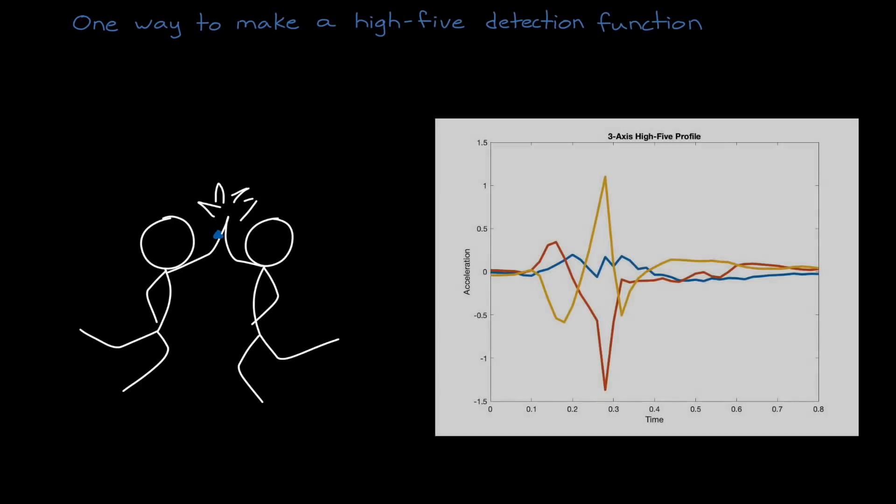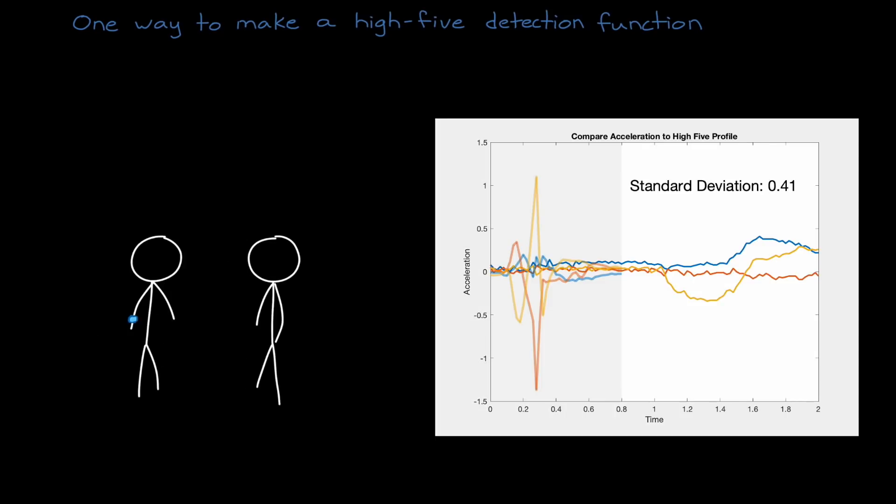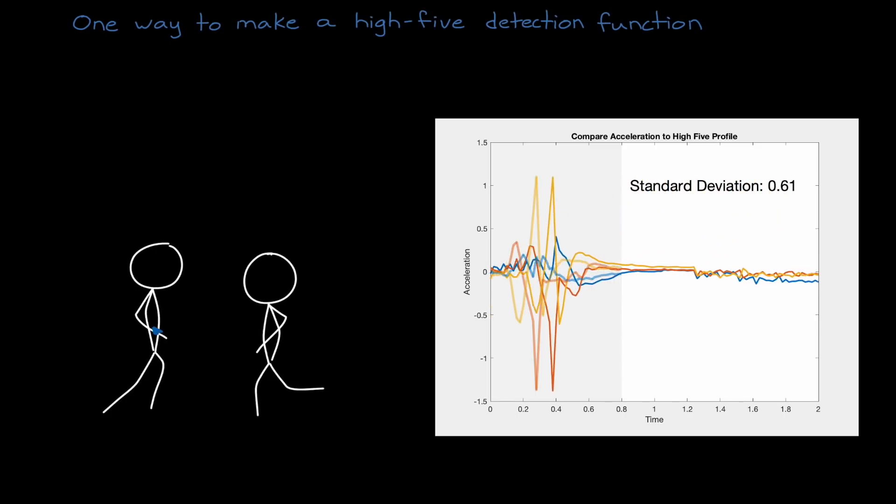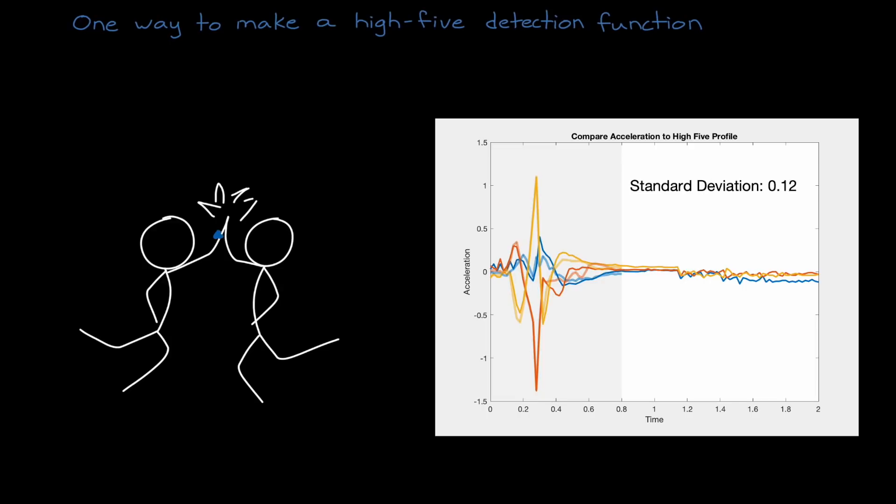Now, here is one example of how we might use a rule-based approach to design this function. Ahead of time, we could record the acceleration of a person performing a high-five. We can label this particular acceleration profile as a high-five, since we purposefully set up the test to produce this data. Now, we can use this labeled data to come up with a representative profile that we could pattern match against the continuous stream of acceleration measurements from the sensor. Our function could look at the standard deviation between the two signals, which is hovering around 0.4 for non-high-five motions, and we could claim that there was a high-five when the deviation drops below some threshold.